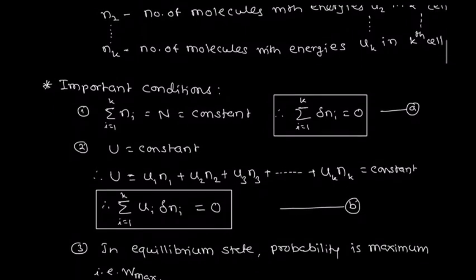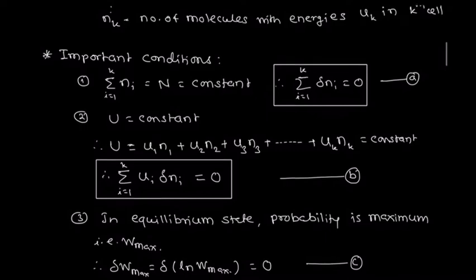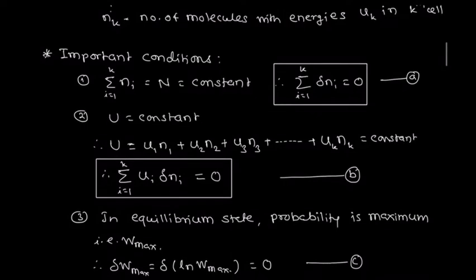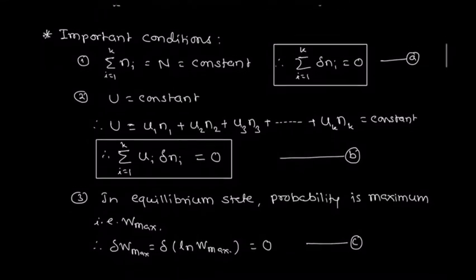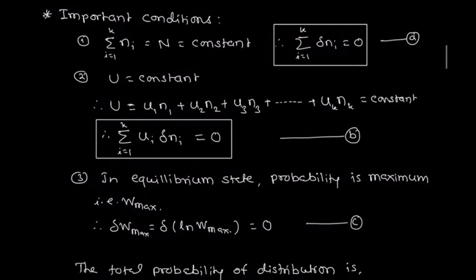The third condition is that in the equilibrium state the probability becomes maximum. If probability is maximum then its derivative becomes 0, that is δW maximum equals δ(log W) maximum equals 0. This is equation C.